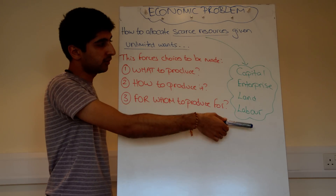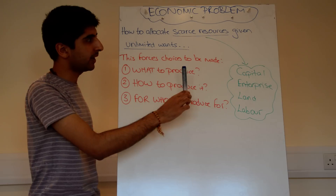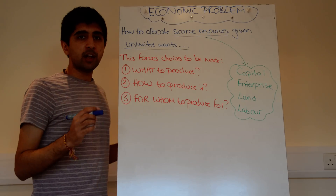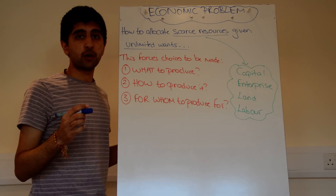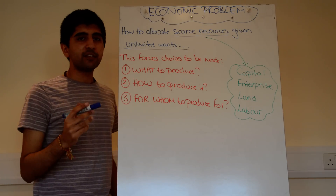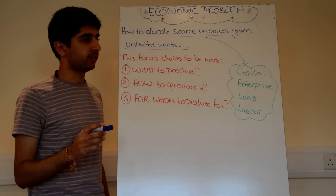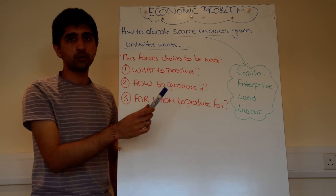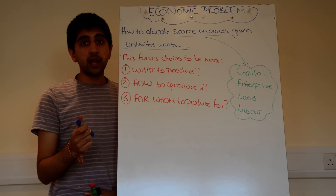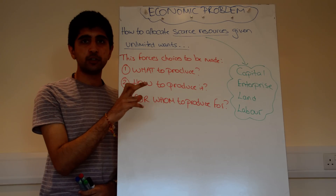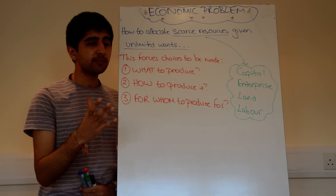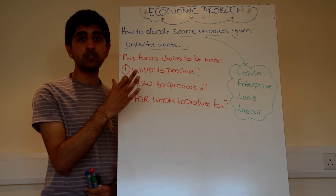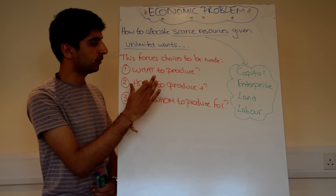So we've got our four factors of production — these are our scarce resources. Now, we know that we don't have enough resources in the world or in an economy to satisfy our unlimited wants. This forces choices to be made. We need to consider what to produce. Given that we've got scarce resources, what needs producing? Let's say in an economy we have a choice between producing manufactured goods or services. If manufactured goods are in higher demand — if that's what the majority of people want — then surely we should produce that level of manufactured goods. So, what to produce is important.